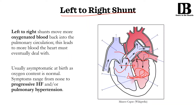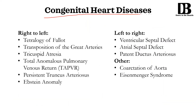When you have more blood going through the pulmonary circulation, your capillary hydrostatic pressure goes up. The way the vessels deal with that is they undergo remodeling, and that leads to pulmonary hypertension. So this is how these pathologies are classified — you have right to left shunts and you have left to right shunts.